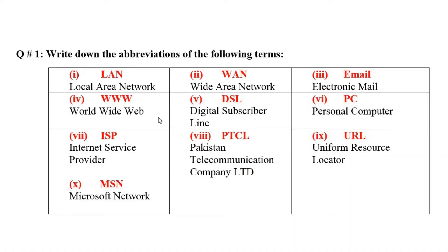Students, in the unit some abbreviations are given. Today we are going to solve them. Number one is LAN — LAN stands for Local Area Network. Number two is WAN — Wide Area Network. Third one is email — email stands for Electronic Mail. Number four is WWW — it stands for World Wide Web. Number five is DSL — DSL stands for Digital Subscriber Line. Sixth one is PC — PC stands for Personal Computer.